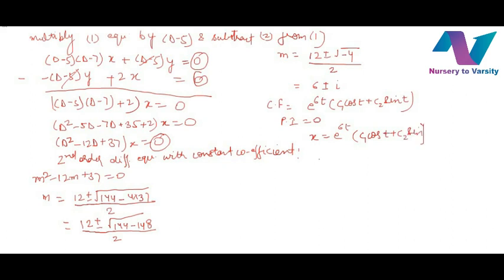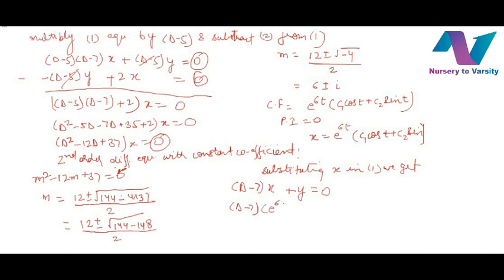Now we find y by substituting x into the first equation. Substituting x into the first equation (D minus 7)x plus y equals 0 gives: (D minus 7)[e^(6t)(c1 cos t + c2 sin t)] plus y equals 0. We apply D using the product rule (u·v method) — differentiation with respect to t.